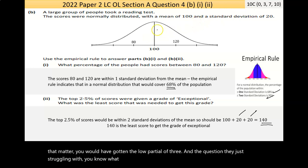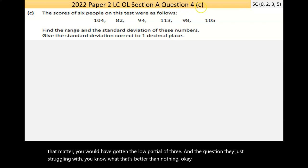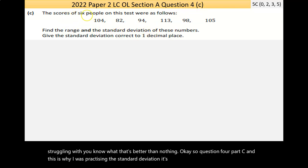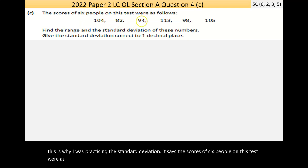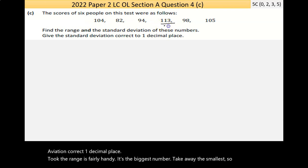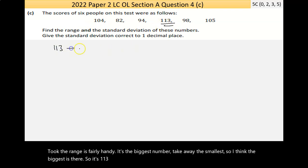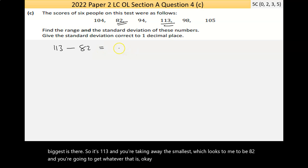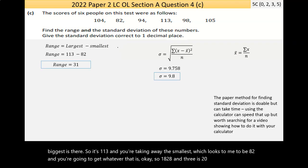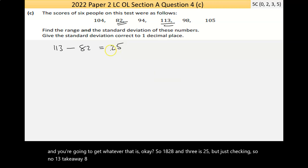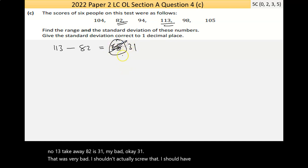Question 4 Part C, and this is why I was practicing standard deviation. It says the scores of six people on this test were as follows. Find the range and the standard deviation of these numbers and give that standard deviation correct to one decimal place. The range is fairly handy, it's the biggest number take away the smallest. The biggest is 113 and you're taking away the smallest which is 82, and you're going to get 31.